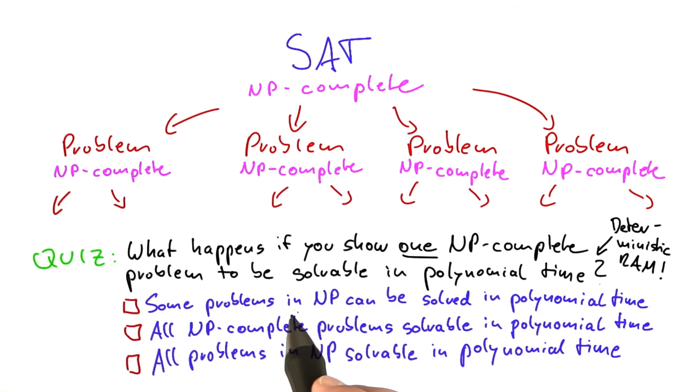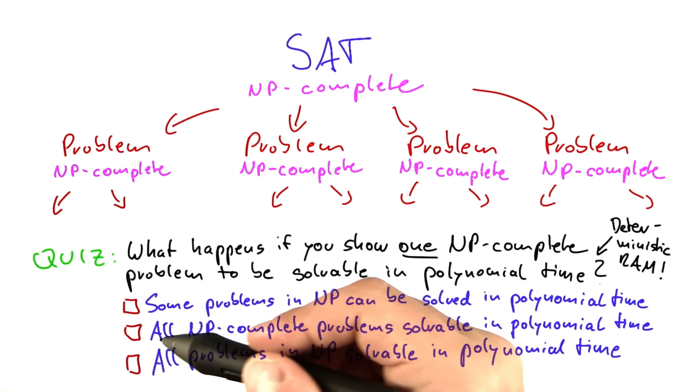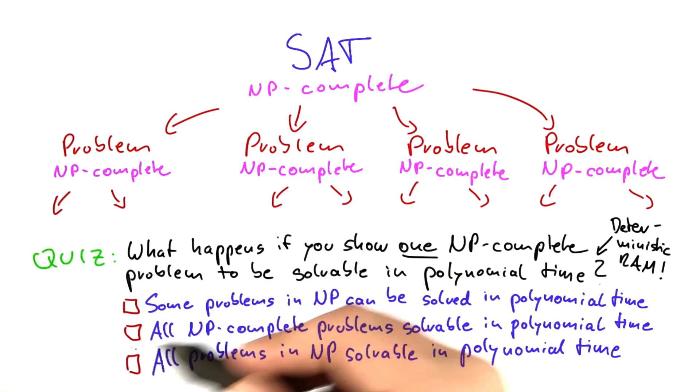Would that mean that some problems in NP can be solved in polynomial time? Again, we're talking about a deterministic RAM here. Would it mean that all NP-complete problems are solvable in polynomial time? Or would it mean that all problems in NP are solvable in polynomial time? And again, more than one of these answers here can be correct, so please check every statement that is correct.